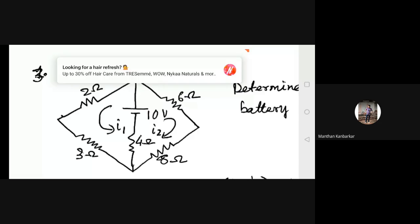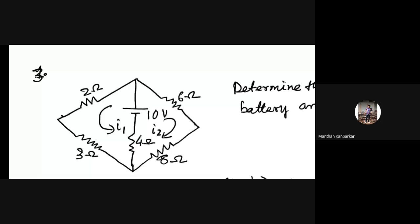Can you tell me the equation for loop 1? For loop 1, ma'am? Yes. 9i1 plus 4i2 equals 220. Good, you have already solved it, right? Yes, ma'am. Have you got the answers of i1 and i2? If you have calculated at home, have you got the answers? No, ma'am, only the equations.